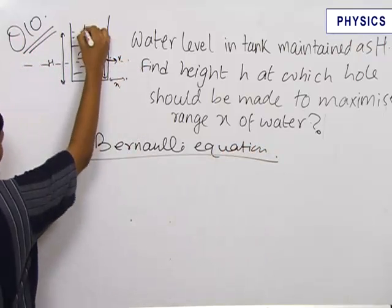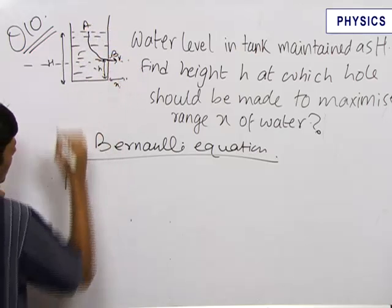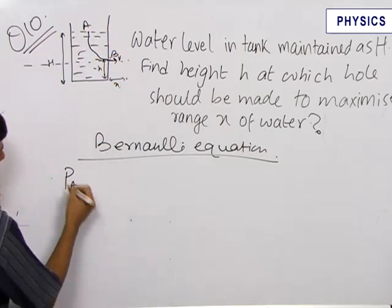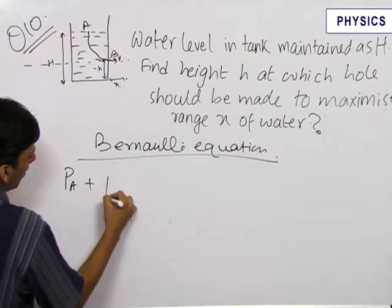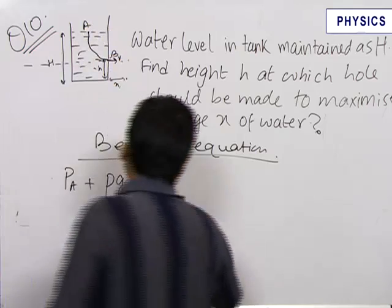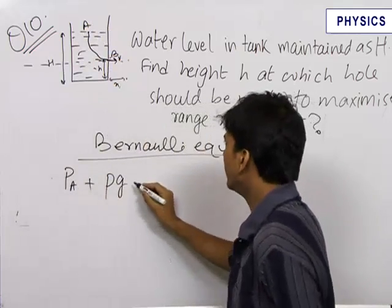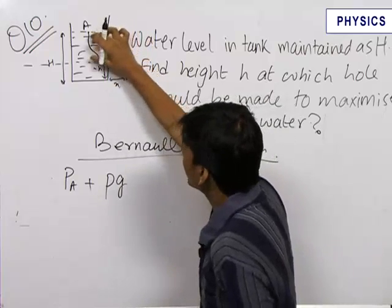Therefore, let this point be A and this point be B. P_A is the pressure at point A plus ρg times the height of this point from the reference level, which is (H - h), plus zero for velocity since water at point A is stationary.